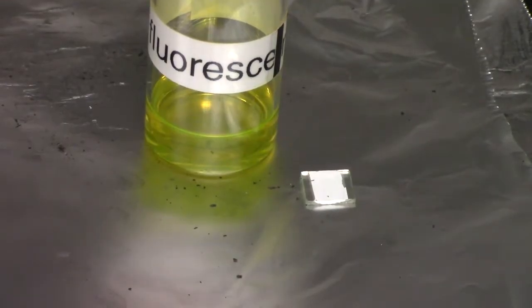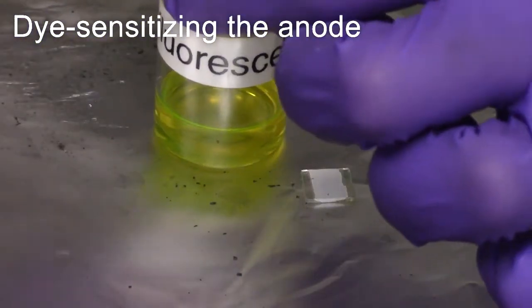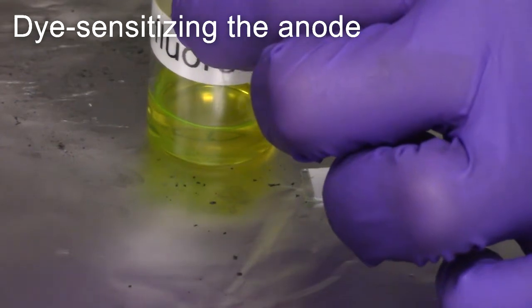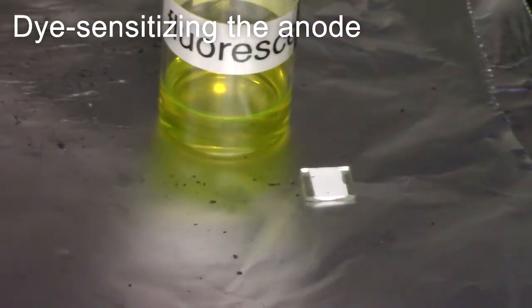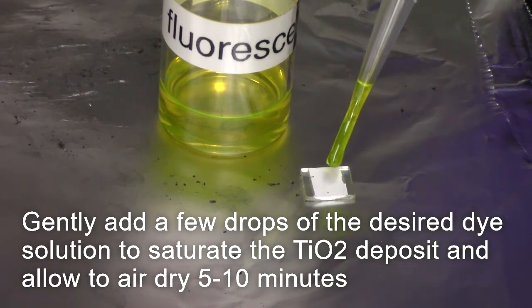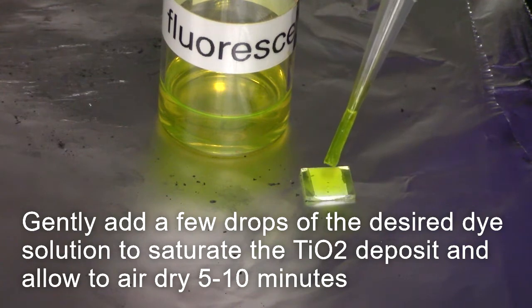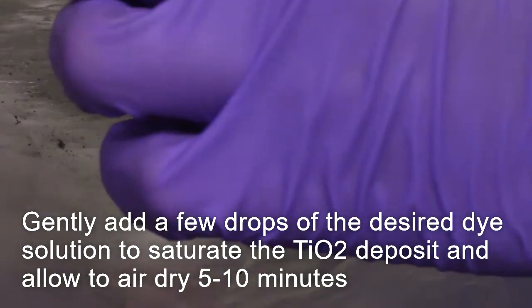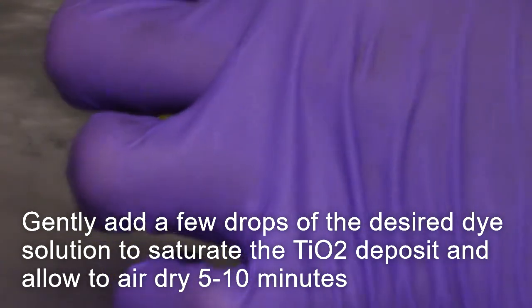The dye sensitizing process of the anode can begin. Take a small amount of the desired dye and gently place a few drops on the TiO2 deposit, just to saturate it. After which allow 5 to 10 minutes for the dye to completely dry on the TiO2 glass surface.